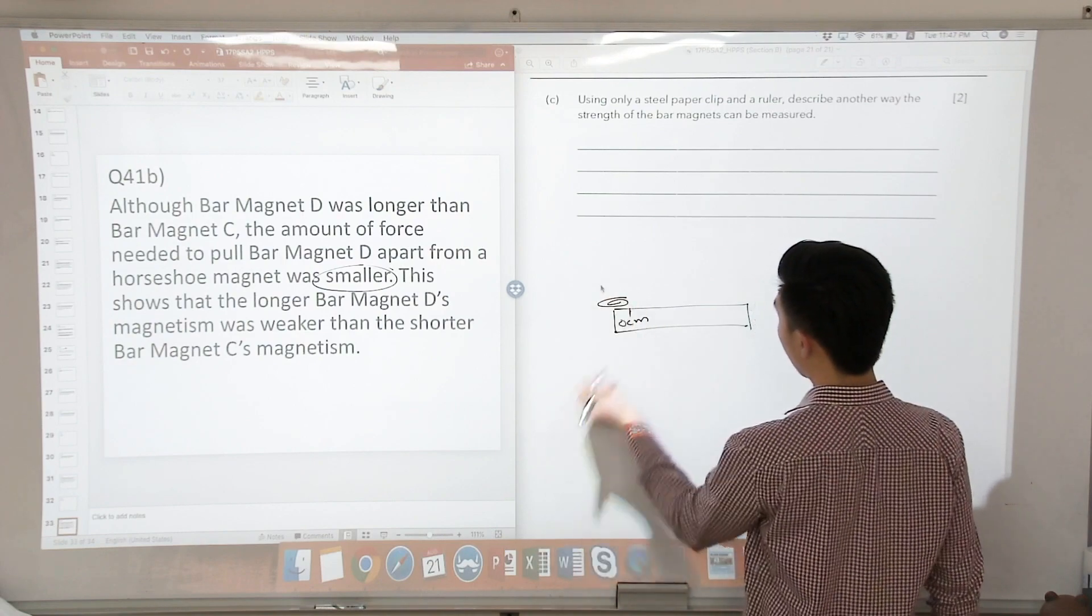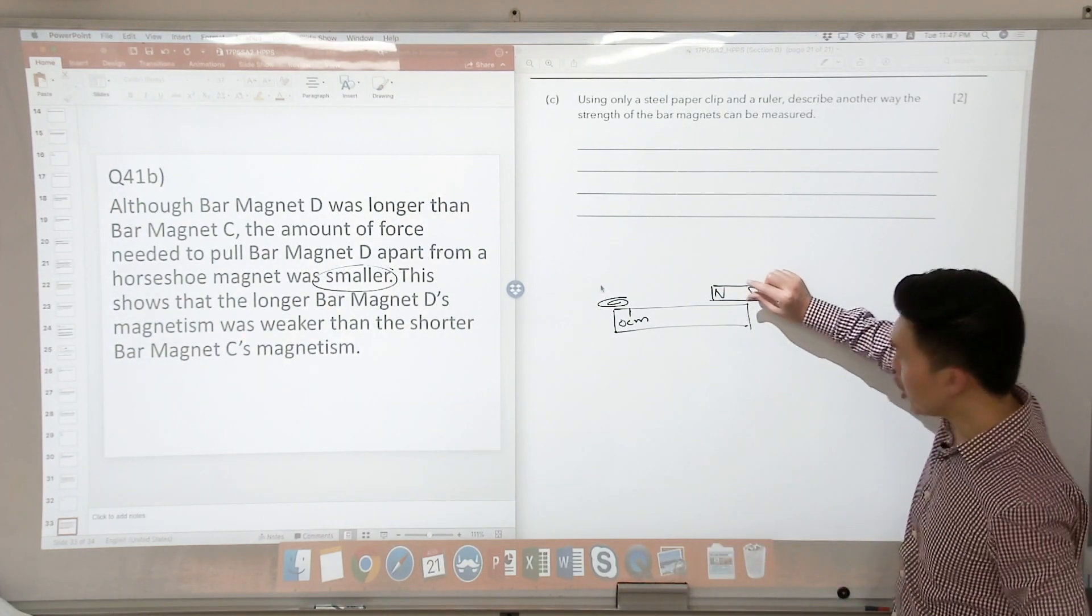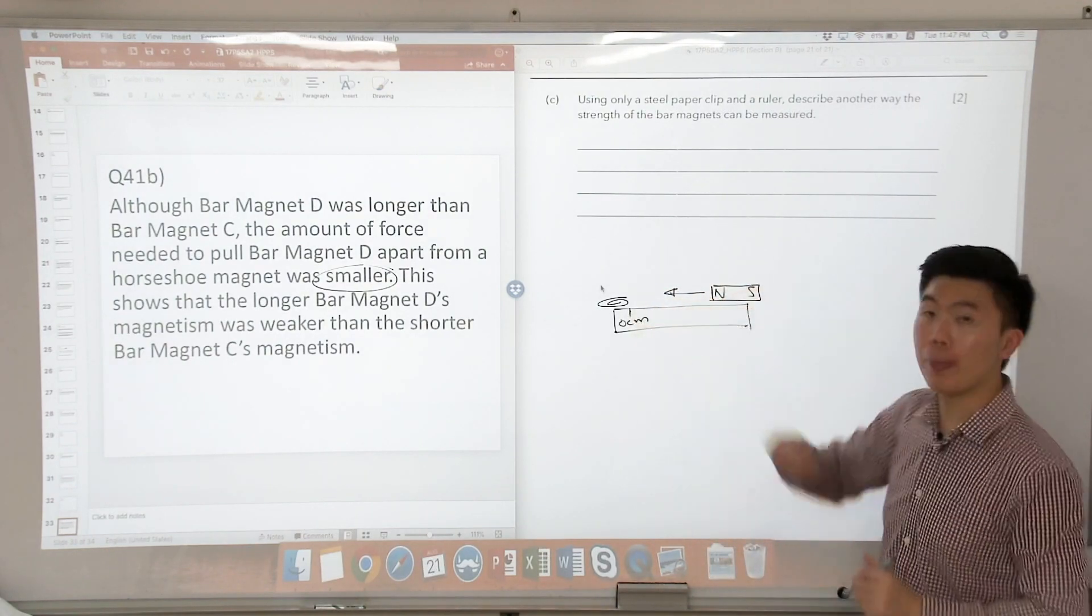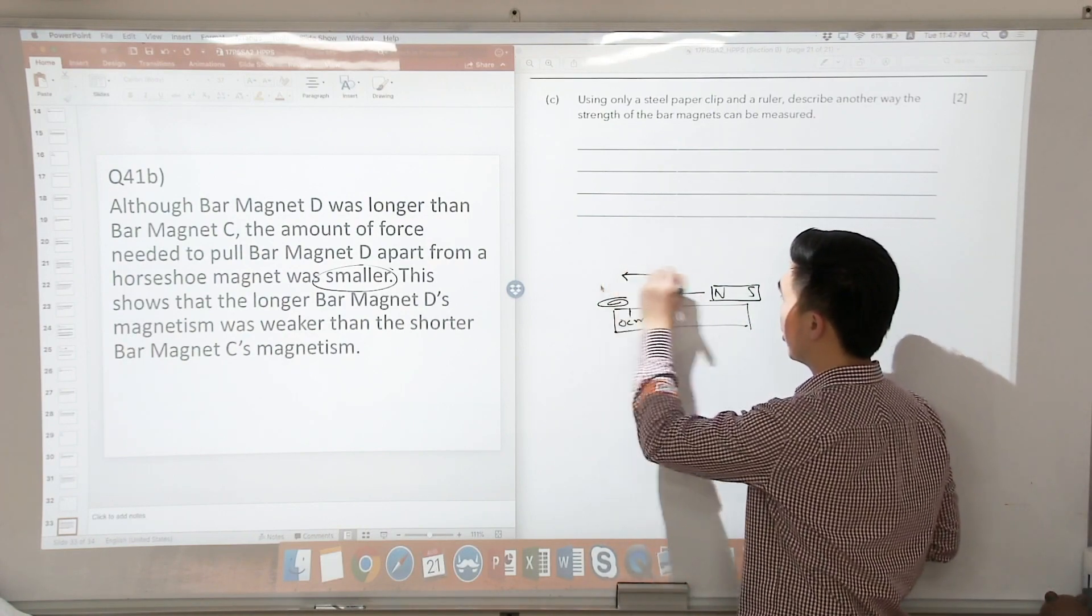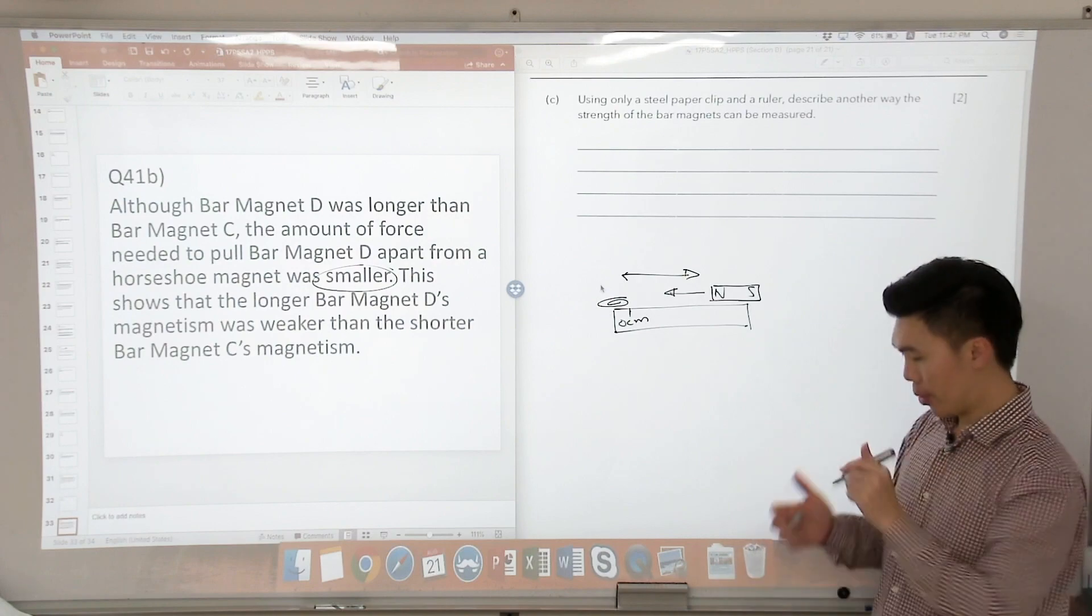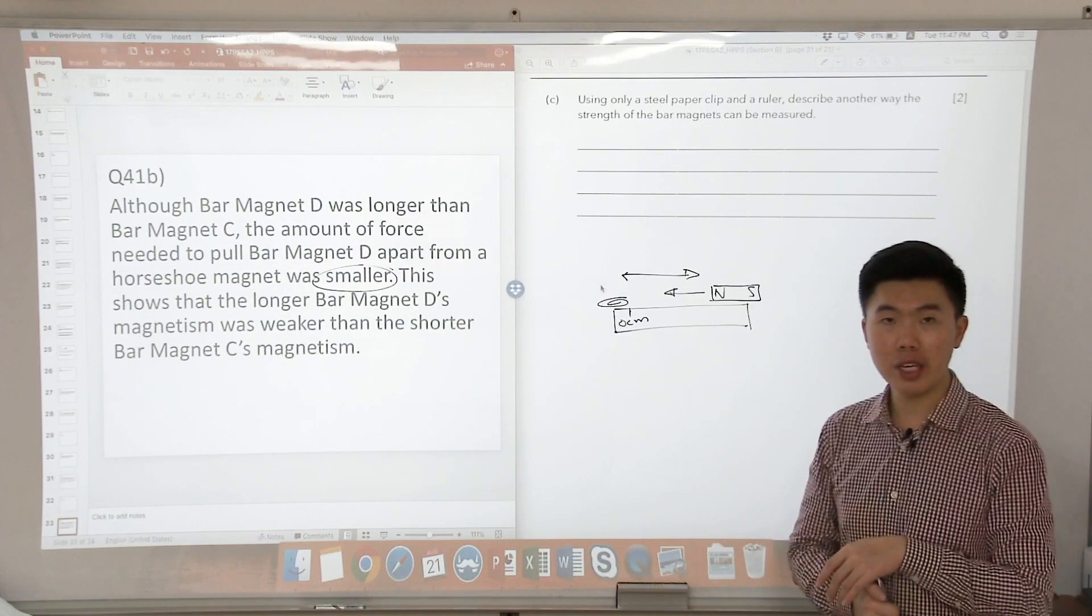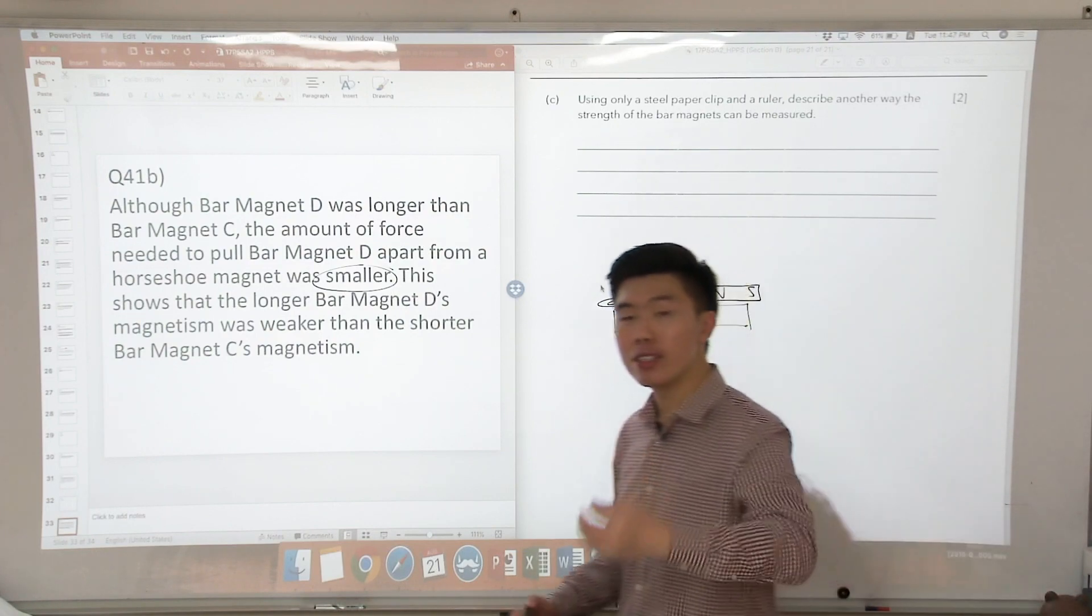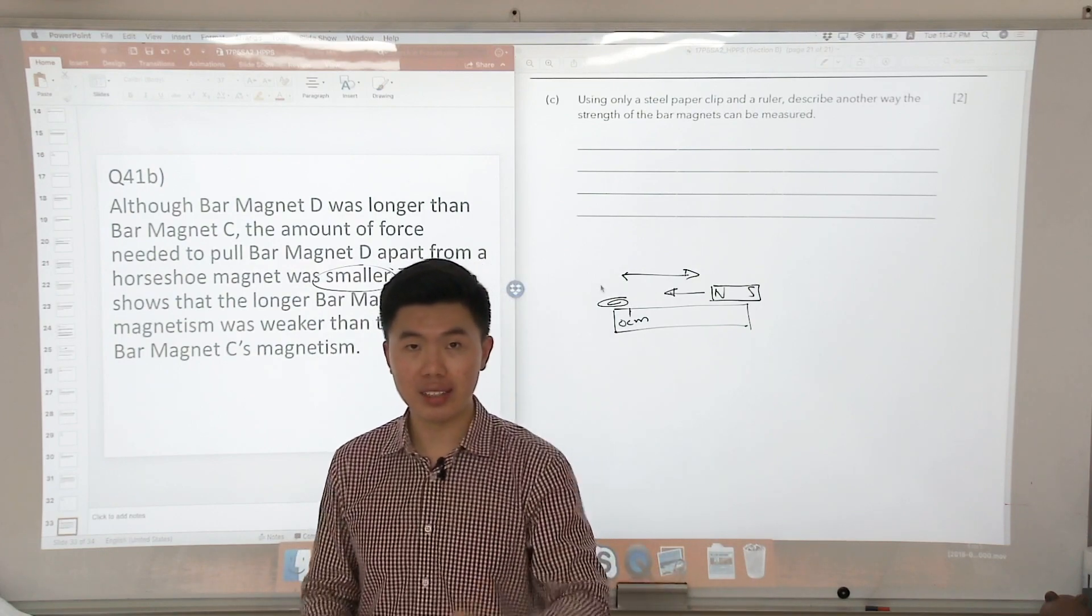So I put my paper clip here. And then I'm going to put my bar magnet on the other side. So what I'm going to do is that I'm going to slowly move my bar magnet towards the paper clip. And I will stop the moment the paper clip starts moving towards the bar magnet. So what does this represent? This will represent the maximum distance between the bar magnet and the paper clip, at which the magnet is able to attract the paper clip. And this will tell me whether the magnet is stronger or weaker. Because magnet's magnetism acts at a distance.